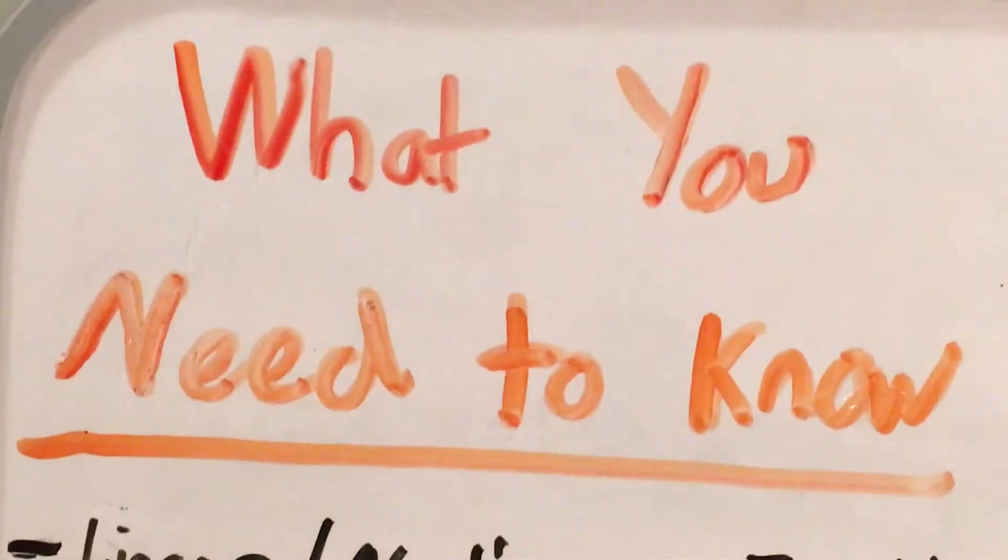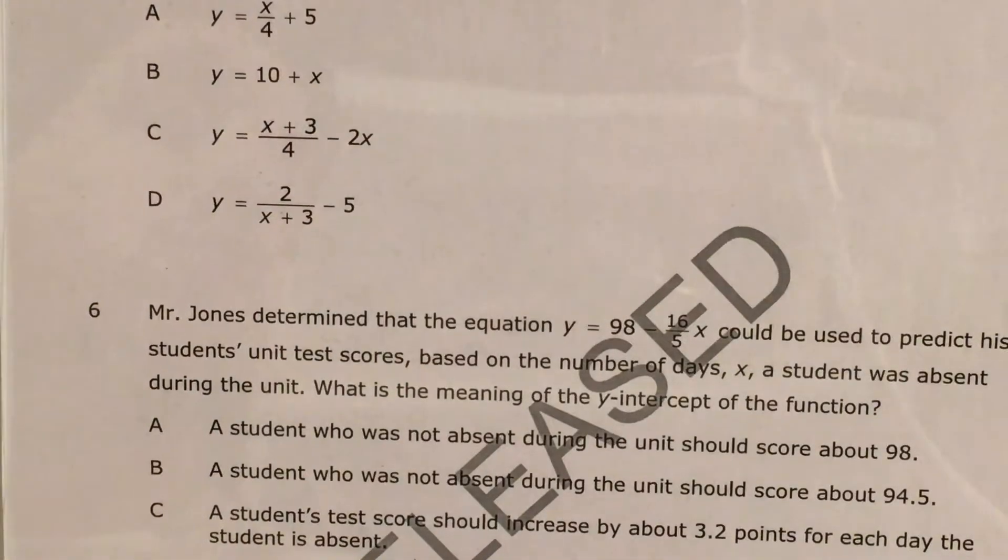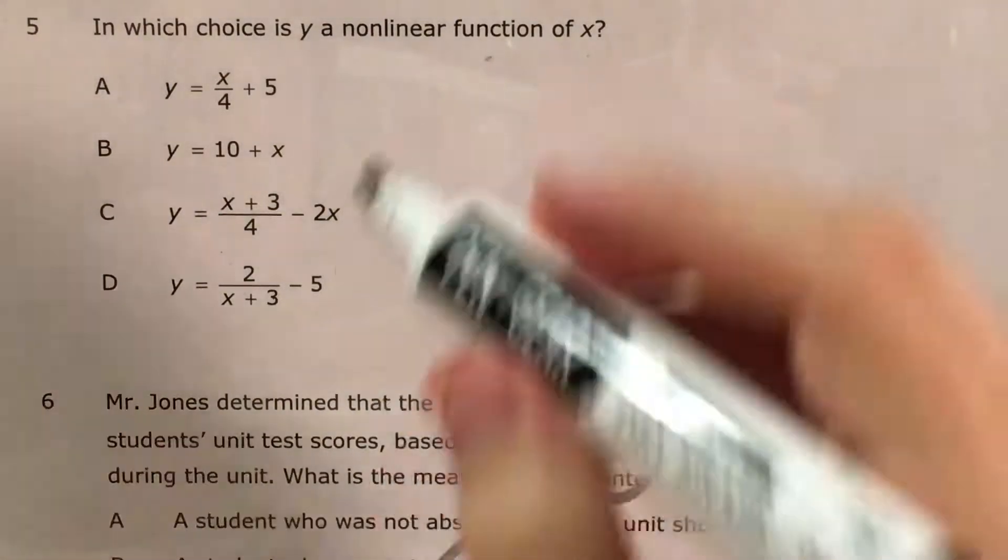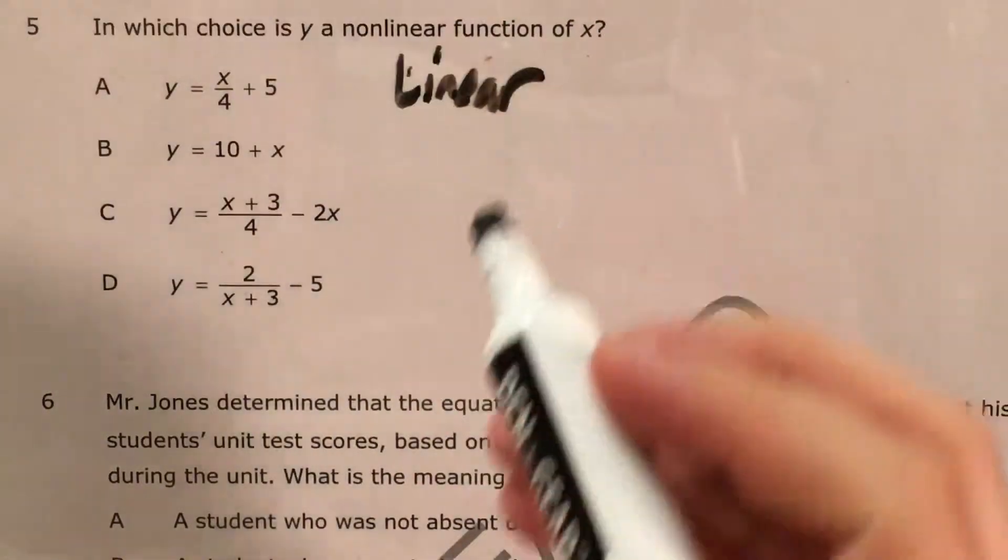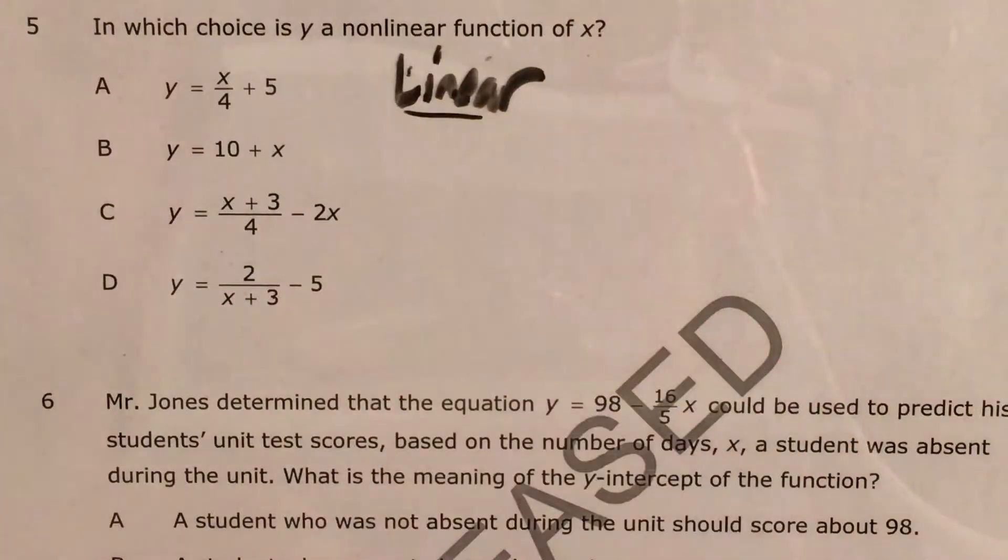To do a question like this, you need to know your linear versus nonlinear functions. I'll go over a quick overview of what all that means. So essentially, to be a linear function, it has to look like a line. Line is part of the word linear.